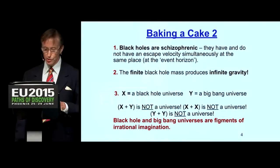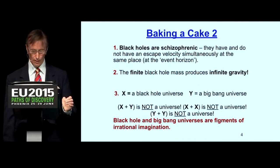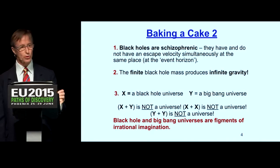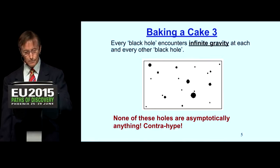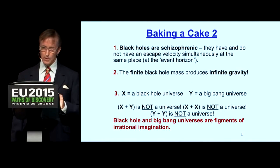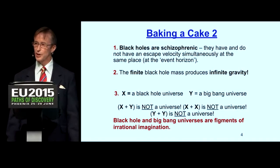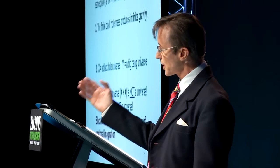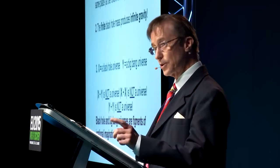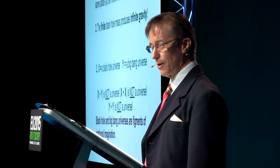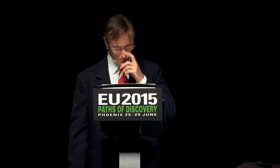Black holes have a very schizophrenic property: they have and do not have an escape velocity simultaneously at the same place. No cosmologist understands what escape velocity means. Nothing can have an escape velocity and no escape velocity simultaneously at the same place, but that's exactly what the black hole event horizon has. They tell us the escape speed at the event horizon is the speed of light — that's why nothing can escape. But if light is traveling at the speed of light and that is the escape speed, wouldn't you expect light to escape?